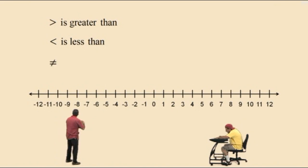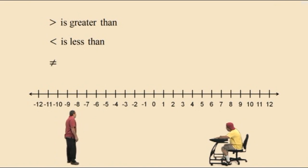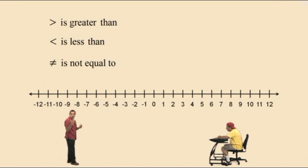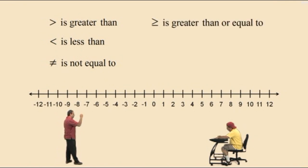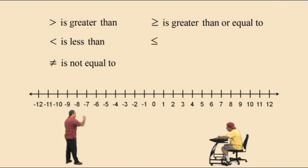Here's an equal sign with a line through it, and this symbol stands for is not equal to. That means it's not in the same place on the number line. Now that symbol there has two cases: is greater than or equal to. If one of the two conditions is met, then the math statement will be true.